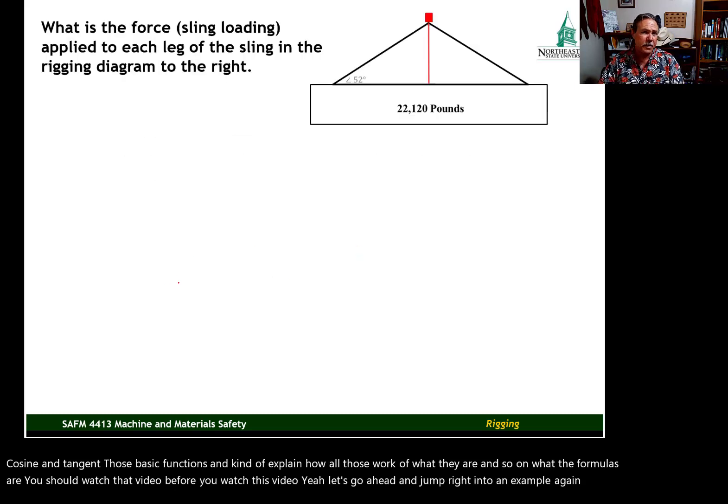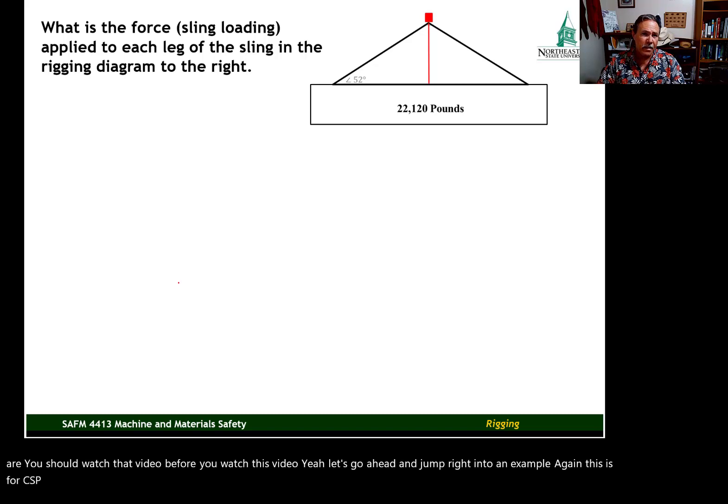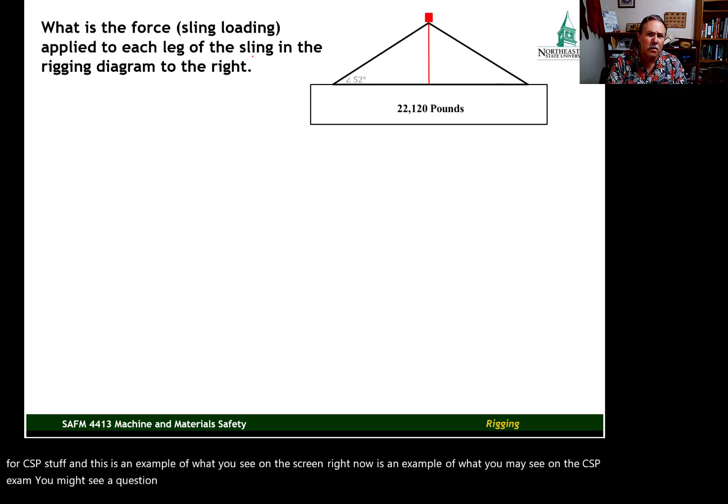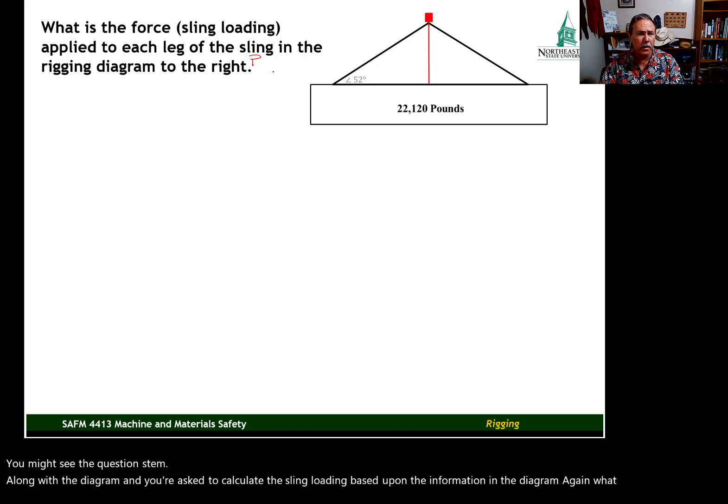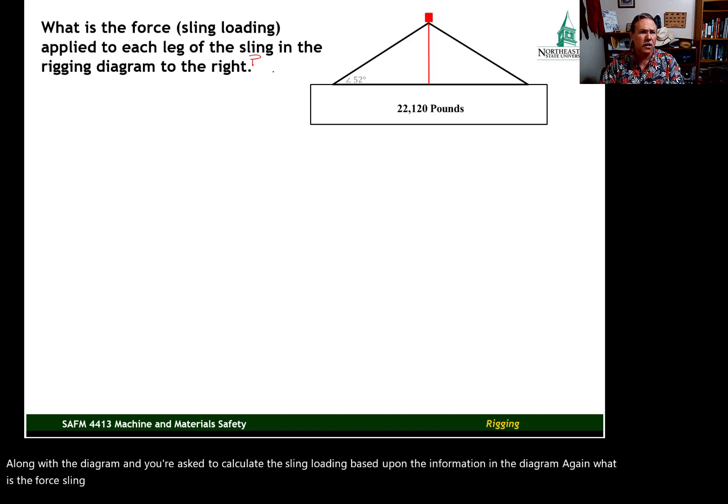This is for CSP stuff. And this is an example. What you see on the screen right now is an example of what you may see on the CSP exam. You might see a question stem, and I need to put a question mark on this. You might see the question stem along with the diagram, and you're asked to calculate the sling loading based upon the information in the diagram. What is the force, sling loading, applied to each leg of the sling in the rigging diagram to the right?